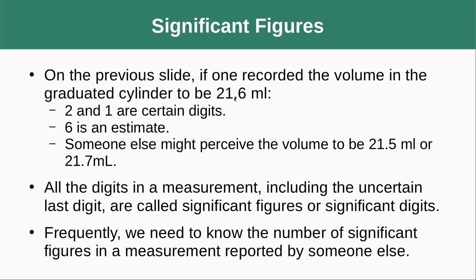Two and one are certain digits. So it's not debatable that it is larger than 21 and less than 22. But six is the estimate. Someone else might perceive the volume be 21.5 or 21.7 milliliters. All the digits in a measurement, including the uncertain last digit, are called significant figures or significant digits. Frequently, we need to know the number of significant figures in a measurement reported by somebody else. And I would say pretty much always we need to know that.